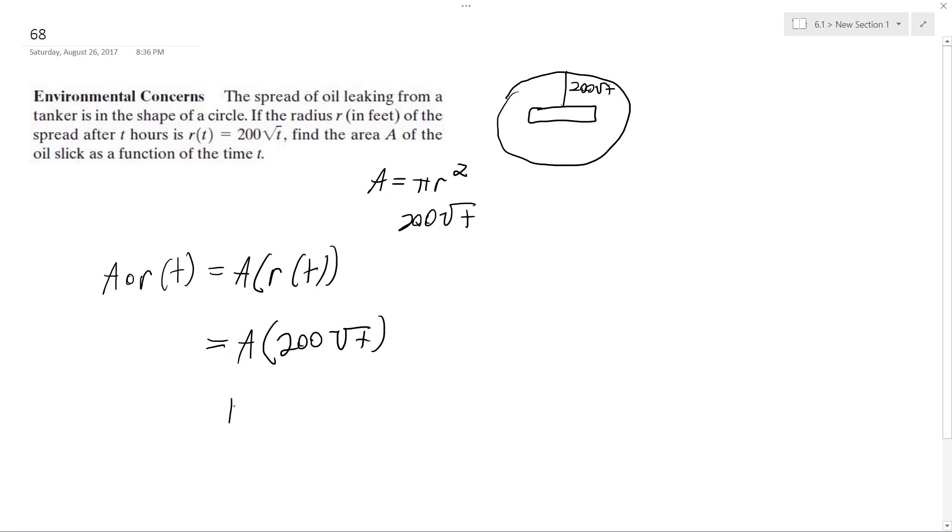This becomes pi times 200 square root of t squared, so this becomes pi times 200 squared times square root of t. Square root of t is the same thing as t raised to the one half and this is squared.